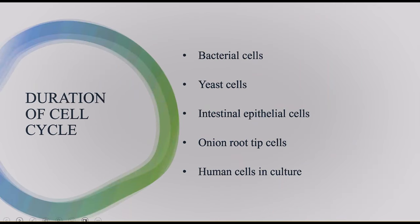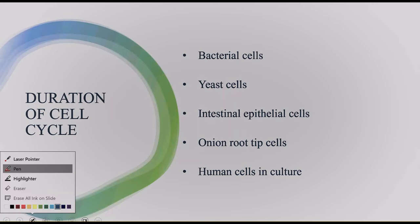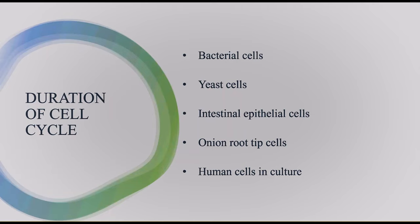There are some examples for the duration of the cell cycle in various organisms. The cell cycle duration for bacterial cells is about 20 minutes. For yeast cells, it takes about 90 minutes. For human intestinal epithelial cells, it takes about 8 to 10 hours. For onion root tip, it takes about 20 hours. For human cells in culture, it takes about 24 hours. These are approximate durations for different types of cells.